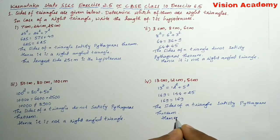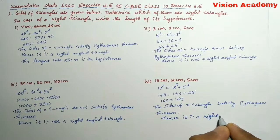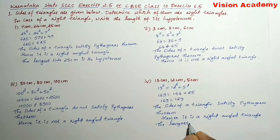Hence it is a right angled triangle. The longest side, 13, is the hypotenuse.